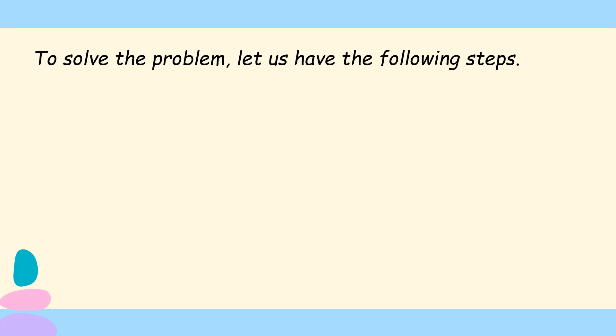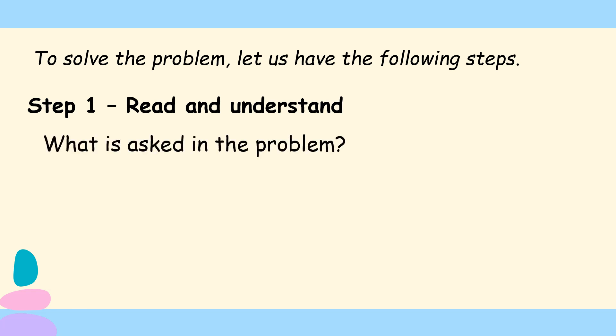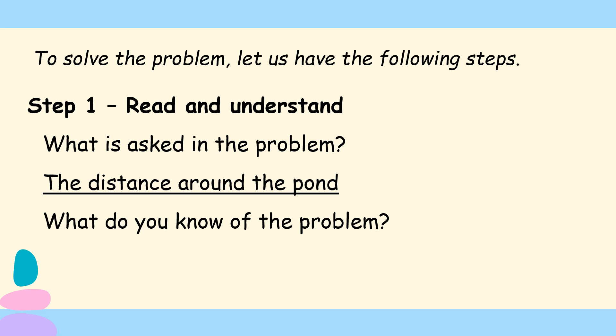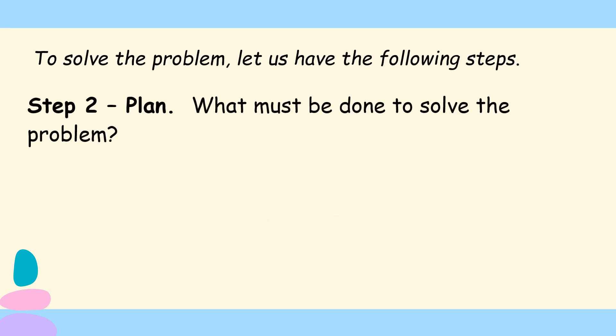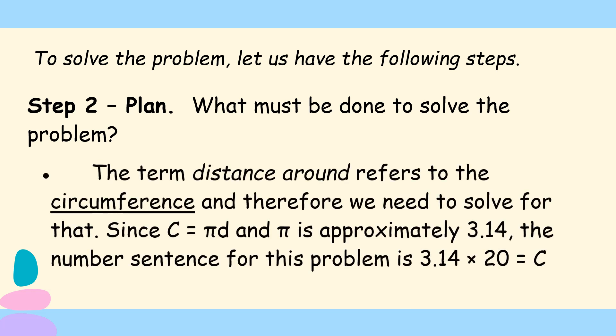So to solve the problem, let us have the following steps. Step 1, read and understand. As we read and understand, let us answer what is asked in the problem. And the answer is the distance around the pond. What do you know from the problem? So the diameter of the pond is 20 meters or simply what is the given number. Step 2, plan. What must be done to solve the problem? The term distance around refers to the circumference. And therefore, we need to solve for that. So C equals pi times D and pi is approximately 3.14. So meaning the number sentence of the problem is 3.14 times 20 meters.